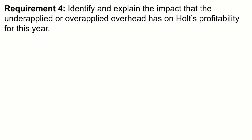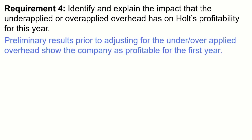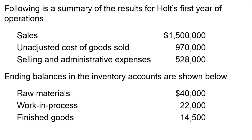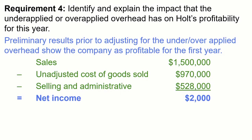Requirement four: identify and explain the impact on Holt's profitability for the year. Preliminary results prior to adjusting show the company is profitable for the first year. Sales of $1,500,000, unadjusted cost of goods sold of $970,000, and selling and administrative expenses of $528,000 are all from the given information. We're recreating that in income statement format. The preliminary net income is $2,000.